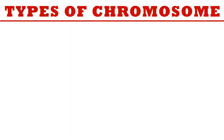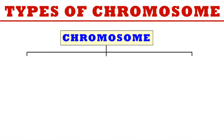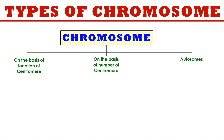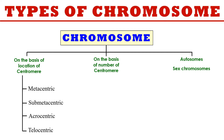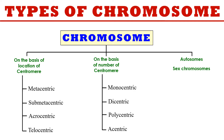Chromosomes can be classified on three bases: on the basis of location of centromere, on the basis of number of centromeres, and as autosomes and sex chromosomes. On the basis of centromere location we have metacentric, submetacentric, acrocentric, and telocentric. On the basis of number of centromeres we have monocentric, dicentric, polycentric, and acentric chromosomes.